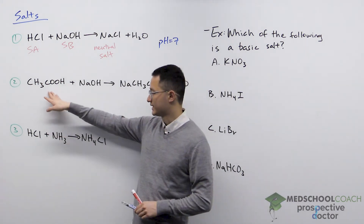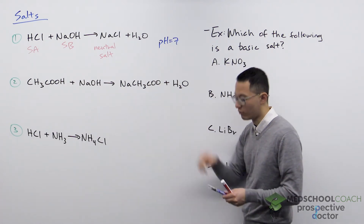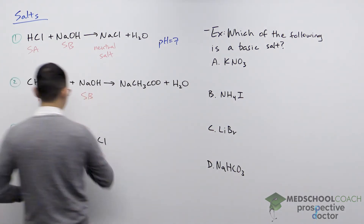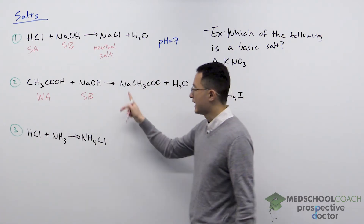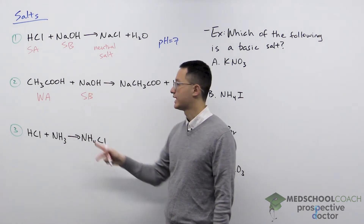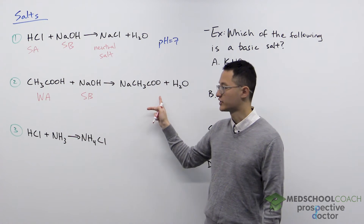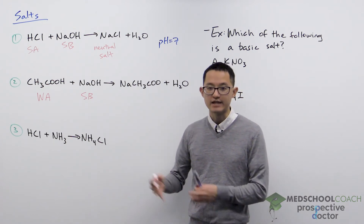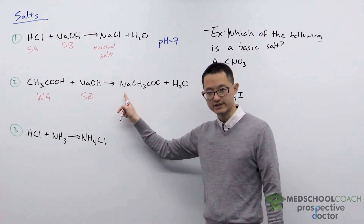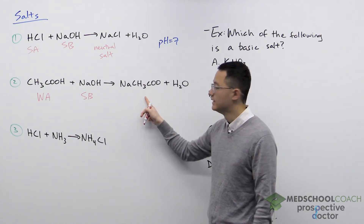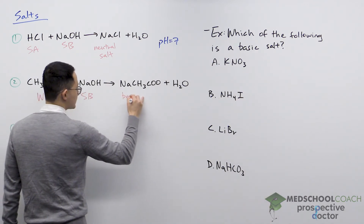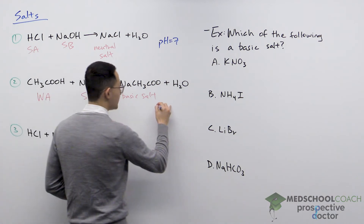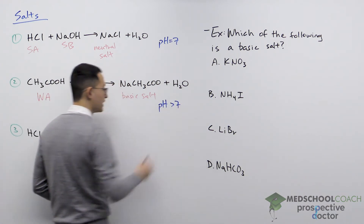In our second case, we have acetic acid plus sodium hydroxide giving us sodium acetate and water. Acetic acid is a weak acid and sodium hydroxide is still a strong base. Na+ is the conjugate acid of a strong base — it has no acidic properties. Acetate is the conjugate base of a weak acid, and since the conjugate of a weak is a weak, acetate is a weak base. So here we have a salt that has no acidic properties but is weakly basic, meaning sodium acetate is a basic salt.